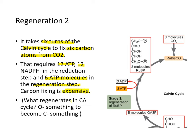What regenerates in the citric acid cycle? It's this regeneration step — closed-loop cycles. The citric acid cycle is also a closed-loop cycle, and it also regenerates something. That something is oxaloacetate, which will become the citric acid.